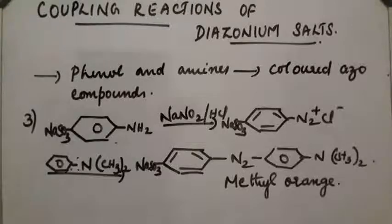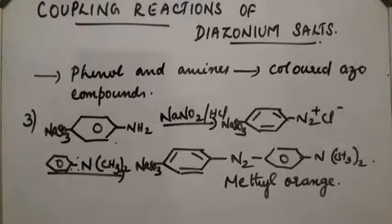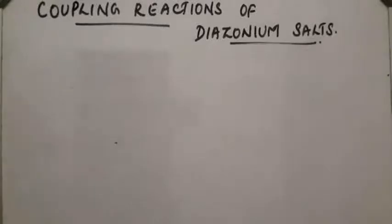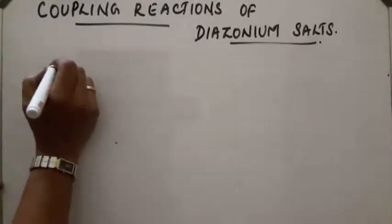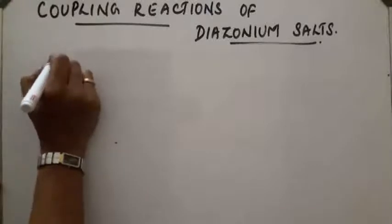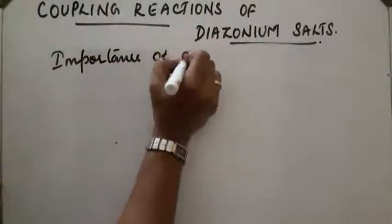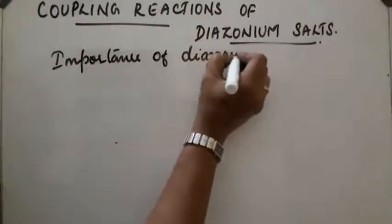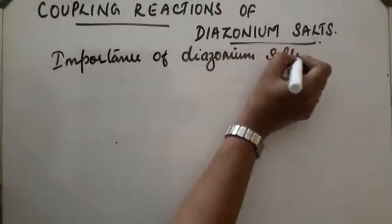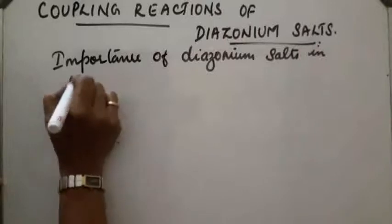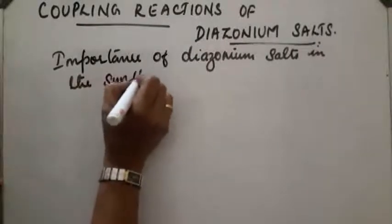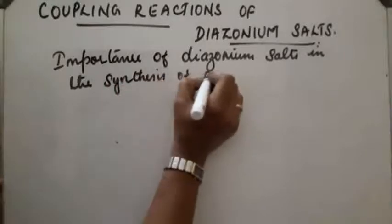So, different azo dye compounds can be obtained from diazonium salts, where diazonium salt acts as the intermediate and the coupling reaction takes place. Next: the importance of diazonium salts in the synthesis of aromatic compounds.